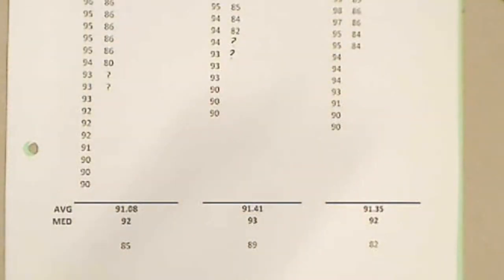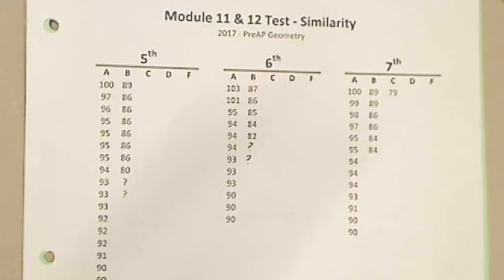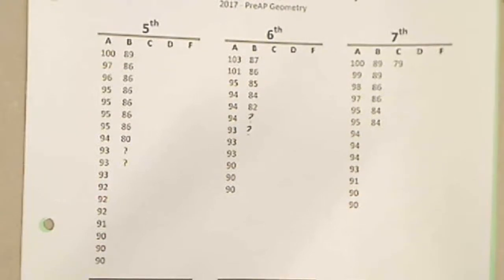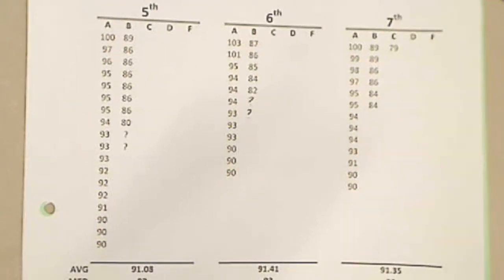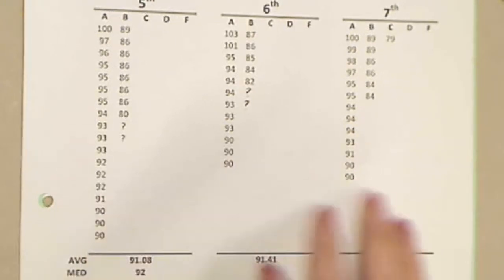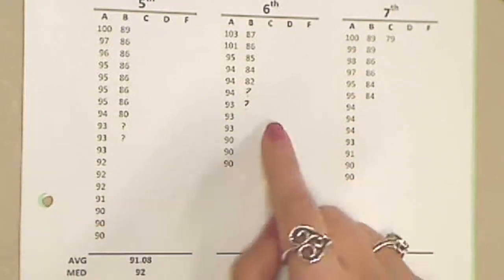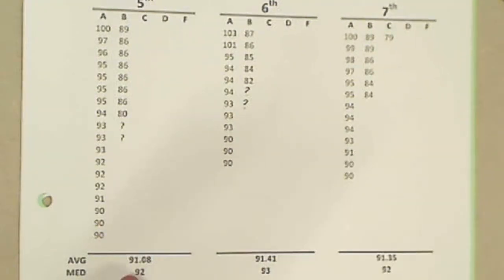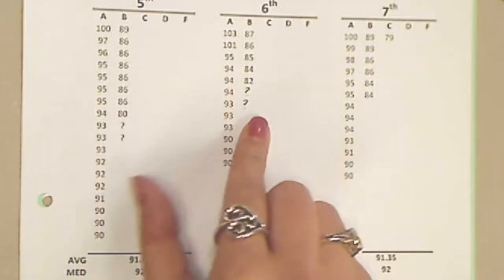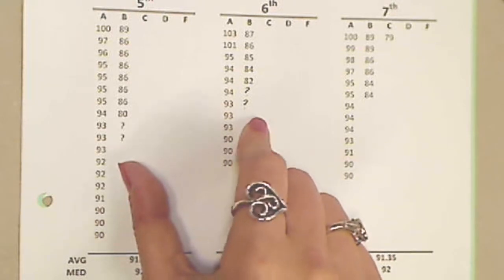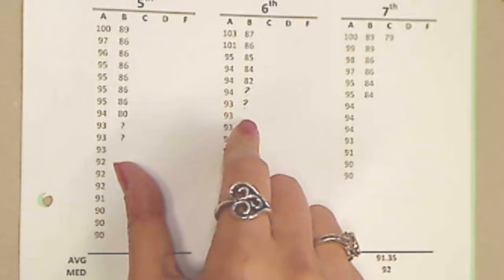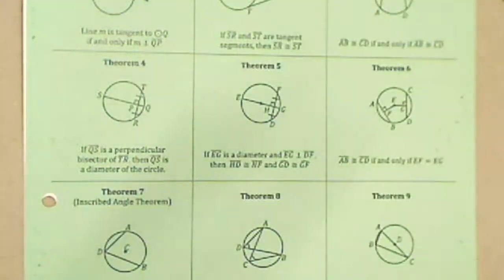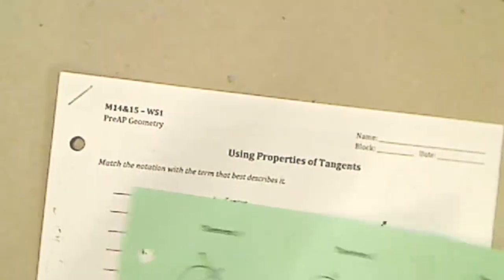Next we're going to talk about the similarity test. I've graded it and your grades are already in the gradebook, so you can check those — but not right now, please do not ask the sub to have your cell phone back. Overall we did great: fifth period all A's and B's, sixth period all A's and B's, seventh period we had one C but it was a very high C. Our medians were 92, 93, and 92. If you are one of the question mark students — two in fifth and two in sixth — you need to go to Scott's now if you haven't already, because you'll want the full time to work on your test.